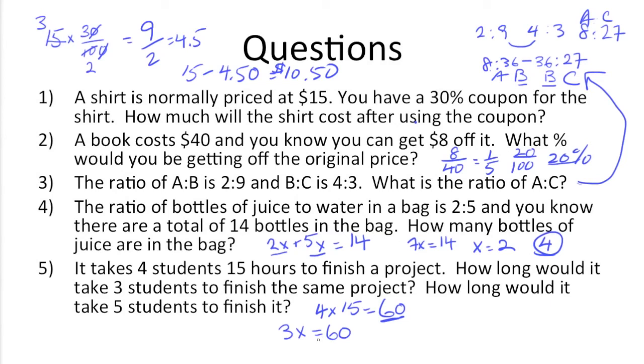This would equal that same constant of 60. So we know that X would be 20, so 3 students would take 20 hours. For 5 students, all we need to do is do 5X, X being, again, the number of hours, have that equal to 60, again, that constant, and X would equal 12.